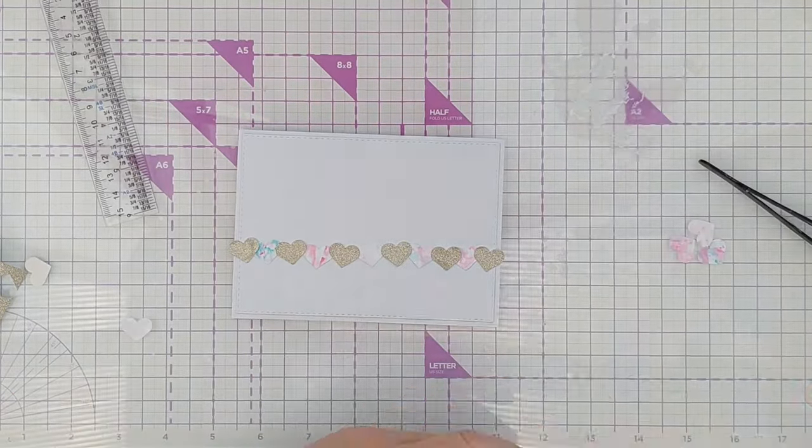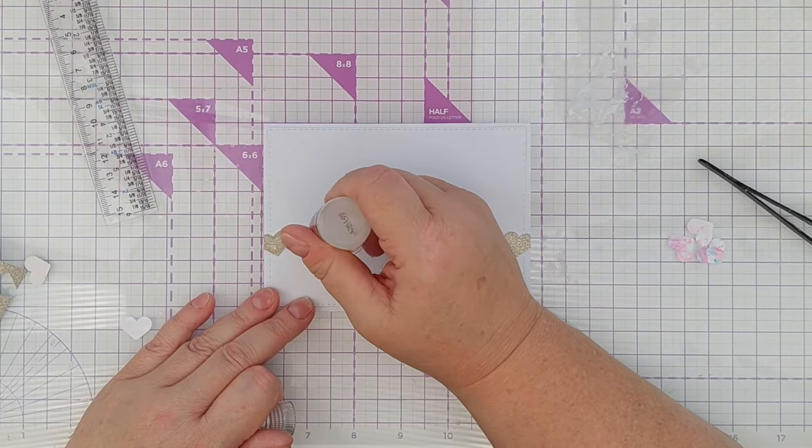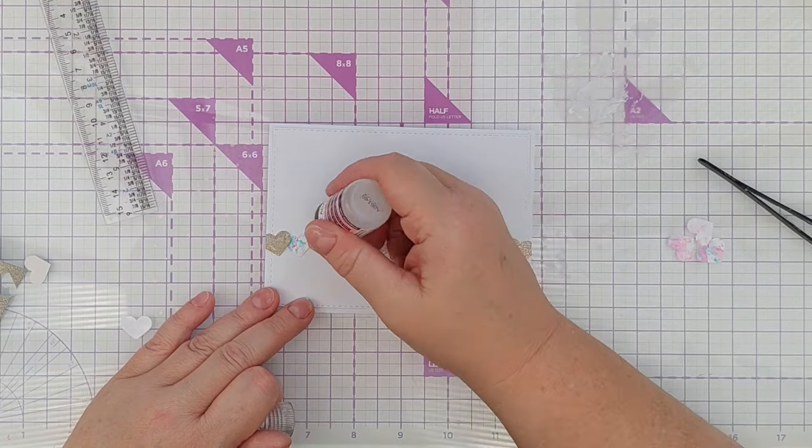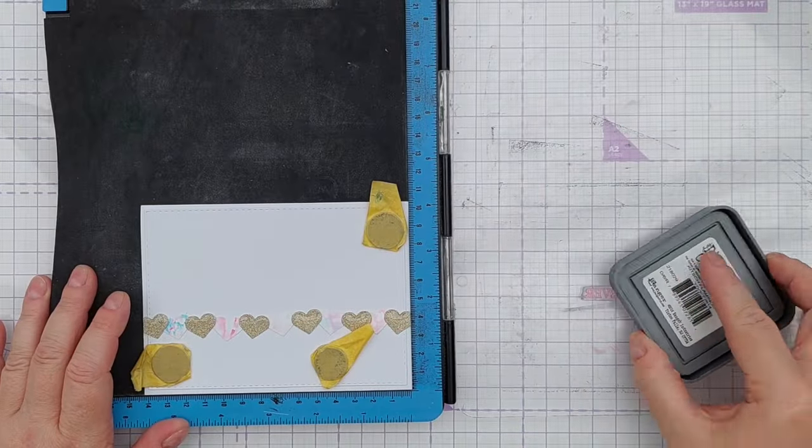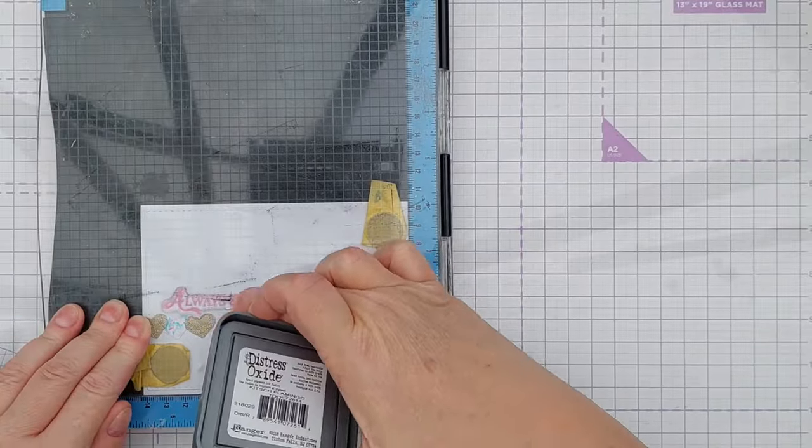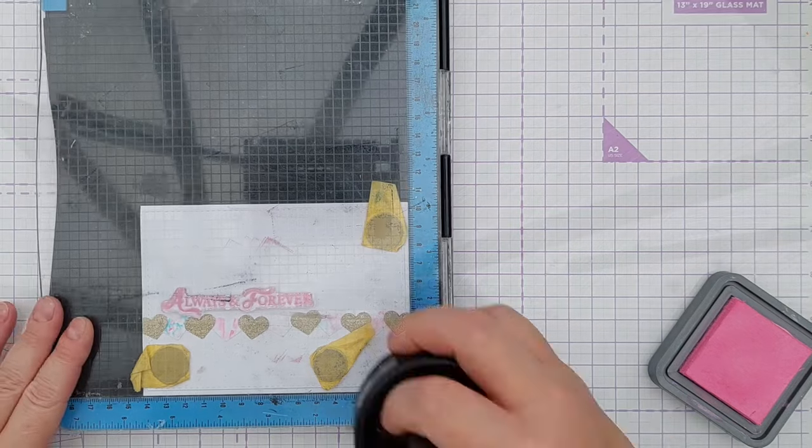Again I added glossy accents to the glittery hearts and once those were dry I added my sentiment and for that I used a big Always and Forever stamp in Kitsch Flamingo Distress Oxide because I thought it went well with the pink in the hearts. And that was it done, all finished.